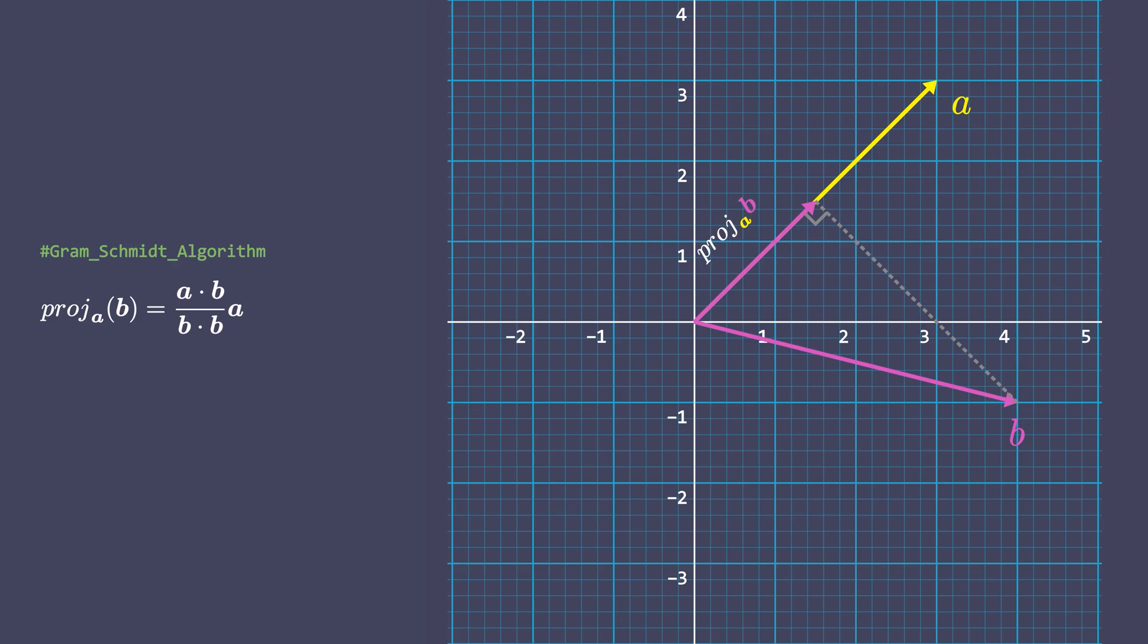Now we need to just figure out the portion of b that cannot be explained by the projection of b onto a. Remaining means subtraction and that's what we do.